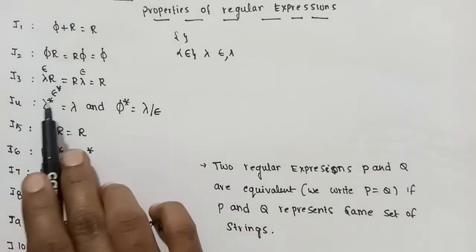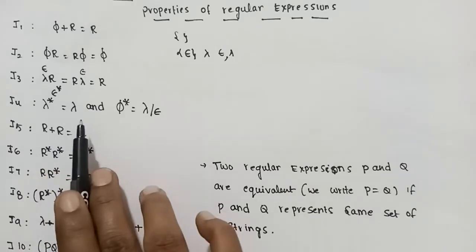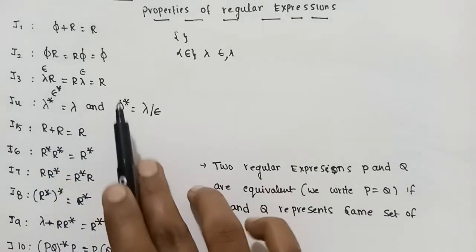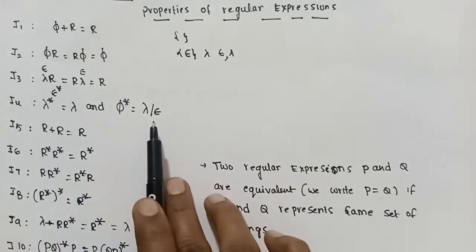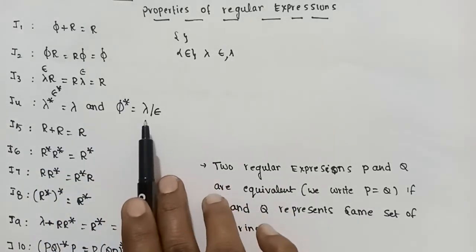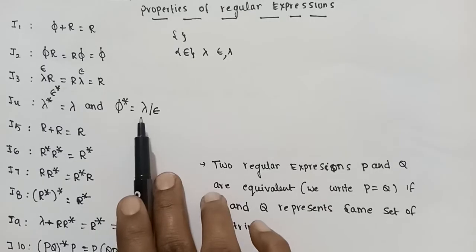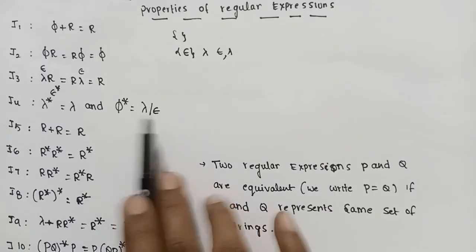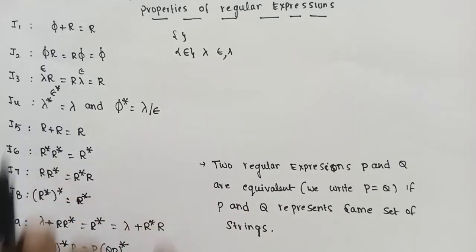If λ* and φ* are applied again, the result involves λ and ε. This is the fourth property.